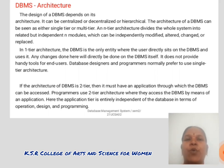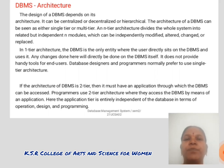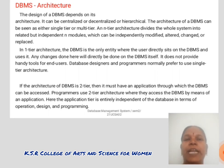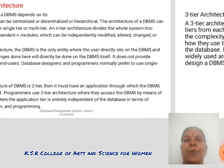DBMS designers and programmers normally prefer to use single-tier architecture. If the architecture of DBMS is two-tier, then it must have an application through which the DBMS can be accessed. Programmers use two-tier architecture where they access the database by means of an application. Here, the application tier is entirely independent of the database in terms of operation, design, and programming.